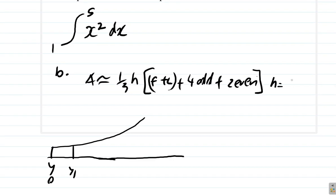Our H is equal to B, which is 5, minus A, which is 1, over the number of strips. N is 6. 5 minus 1 is 4 over 6, which is 2 over 3. H is 2 thirds. So that means the width of this is 2 thirds.